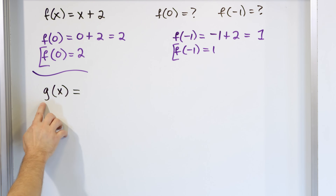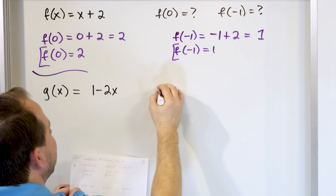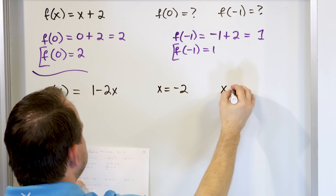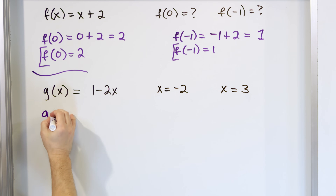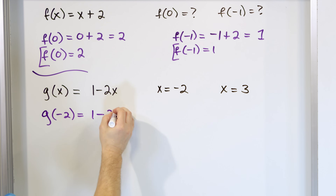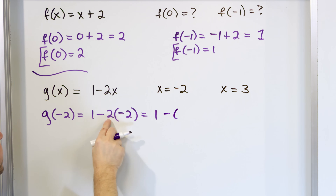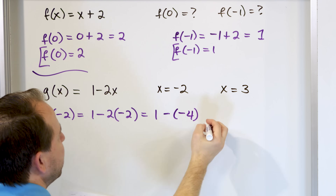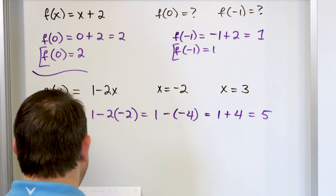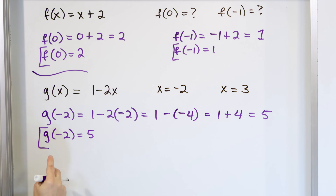So this function g of x is 1 minus 2 times whatever x is. We want to evaluate it at x equals negative 2 and at x equals positive 3. g evaluated at negative 2 means we stick negative 2 into x: we have 1, then the multiplication gives us negative 4, or 1 plus 4, which gives us 5. So g evaluated at negative 2 is equal to 5.